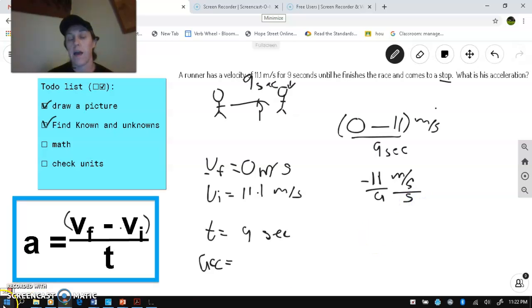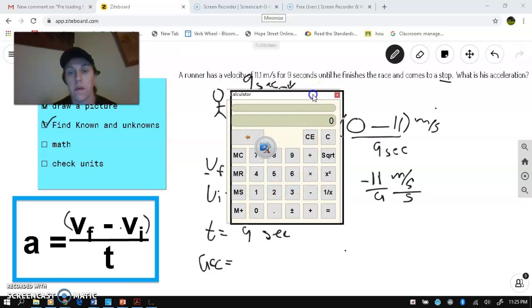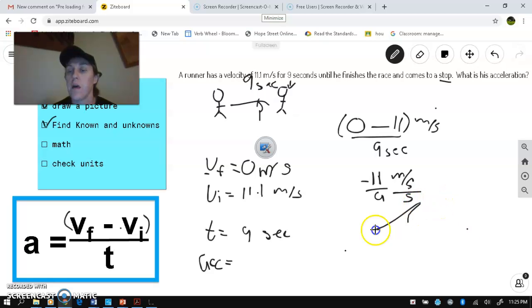So, and actually, I've got my handy calculator. So, 11 divided by nine equals 1.2 repeating. So, this is going to be 1.2. If you want to be fancy, you can put the line on top. That's fancy, fancy stuff. Okay. Meters per second squared.